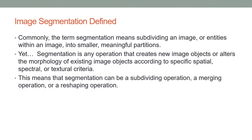Here is a more formal definition of image segmentation. Commonly, segmentation means subdividing an image into smaller meaningful partitions. More broadly, segmentation is any operation that creates new image objects or alters the morphology of existing image objects according to specific spatial, spectral, or textural criteria. This means that segmentation can be a subdividing operation, a merging operation, or even a reshaping operation.